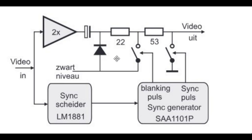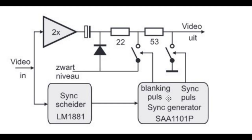And then you see here some switches, and those switches are operated by a sync generator — that's an integrated circuit, the SAA1101P or T. The T one is the SMD version. And here we have a sync separator; it could be an LM1881, but better is to make it with discrete components, like three transistors, as shown in the schematic. So the video goes via this circuit — it will show the noise, separate the sync, and with that sync you synchronize the sync generator. And that sync generator makes the blanking pulse and the sync pulse.